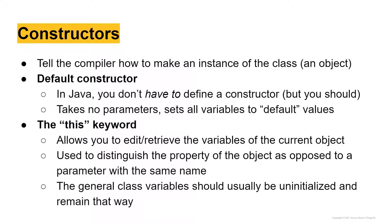Now I want to talk about the 'this' keyword, because we use it a lot in our constructors and in other methods within the class. The 'this' keyword allows you to edit and retrieve the variables of the current object. It's used to distinguish the property of the object as opposed to some parameter with the same name, and we'll see why this is useful when we get into parameterized constructors.